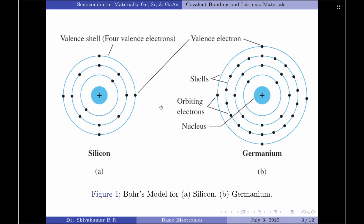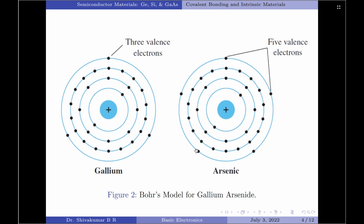Coming back to silicon and germanium, note that both silicon and germanium have 4 electrons in the outermost shell. These electrons are referred to as valence electrons. From figure 2, that is for gallium arsenide, we note that gallium has 3 valence electrons and arsenic has 5 valence electrons.